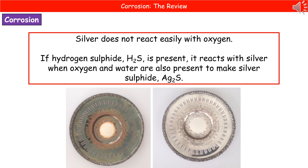Now, this is what you've probably seen. If you've got any random silver items kicking around at home, then they're the ones that go that tarnished colour, the sort of blackish colour you can see on the left.